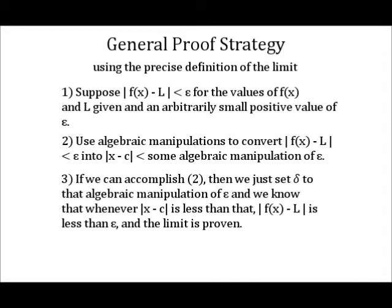Proving a limit using the epsilon-delta definition takes the following general strategy. First, suppose that the absolute value of f(x) minus L is less than epsilon, for the values of f(x) and L given, and an arbitrarily small positive value of epsilon.